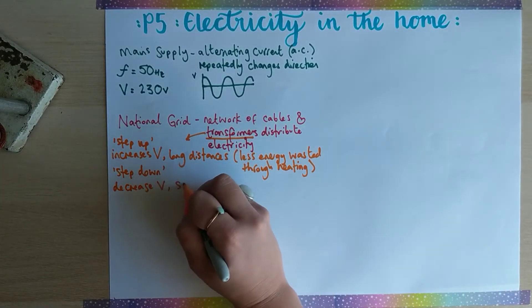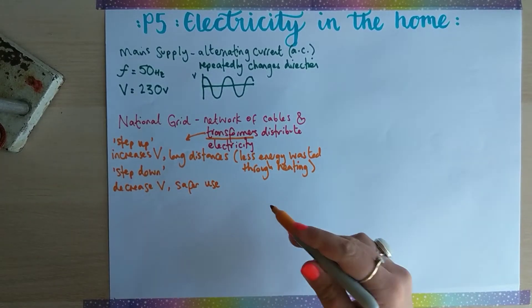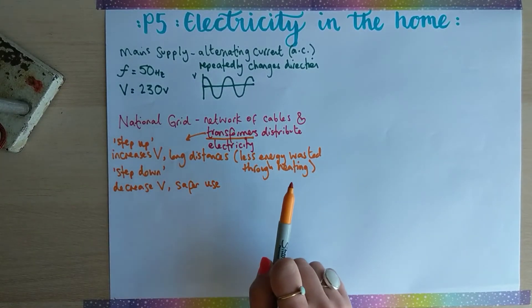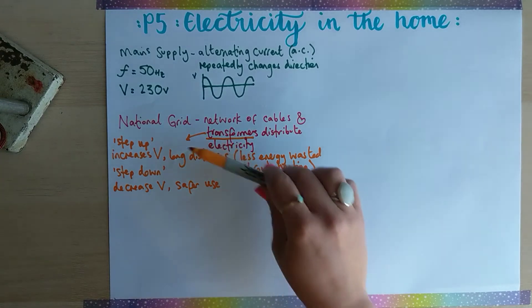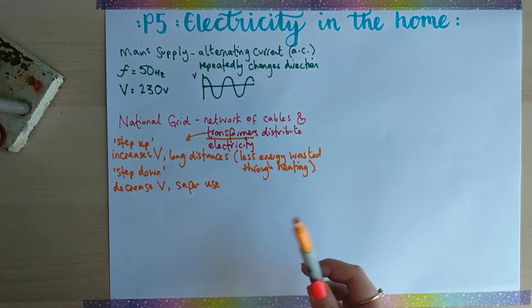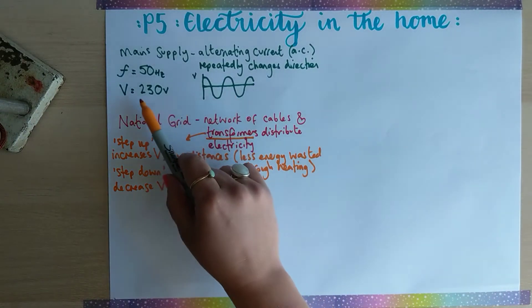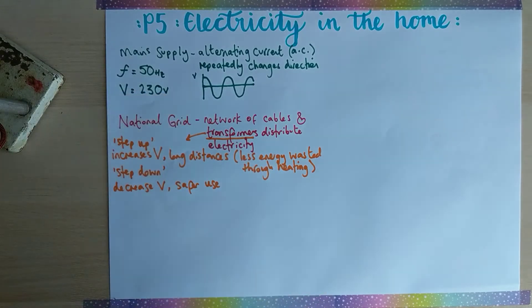This is because it is safer to be used in homes. The big power cables on pylons have 400,000 volts or something very high, whereas in our homes it gets stepped down to 230 volts so it is safer for us to use.